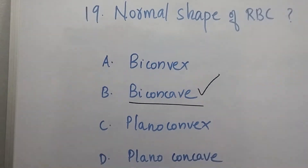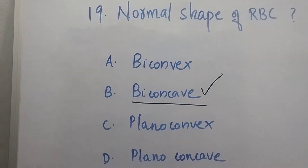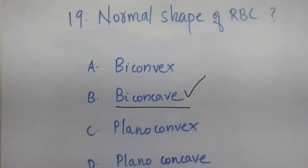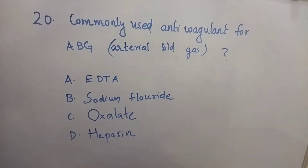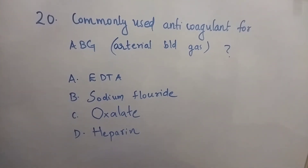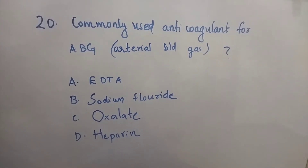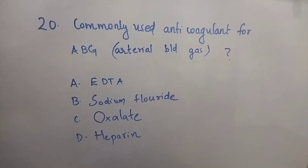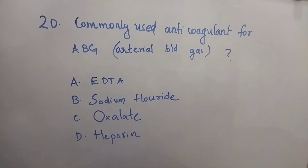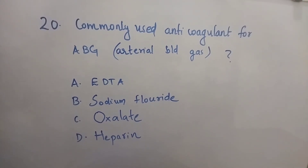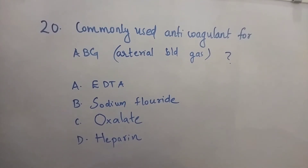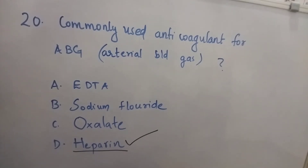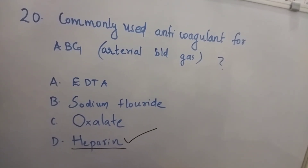Question number 19: Normal shape of RBC — Option A: Biconvex. Option B: Biconcave. Option C: Planoconvex. Option D: Planoconcave. The right answer is Option B, Biconcave. Question 20: Commonly used anticoagulant for arterial blood gas — Option A: EDTA. Option B: Sodium fluoride. Option C: Oxalate. Option D: Heparin. The right answer is Option D, Heparin. Heparin is the commonly used anticoagulant for arterial blood gas analysis.